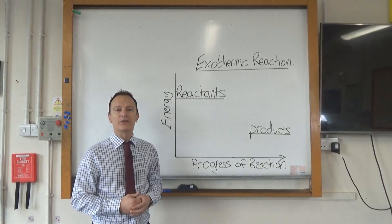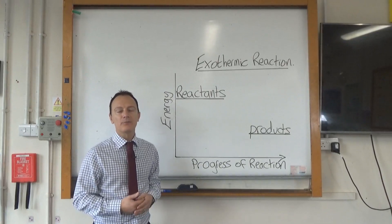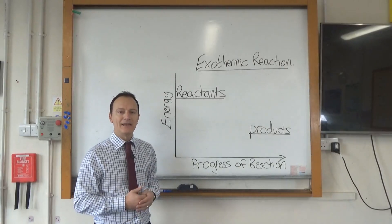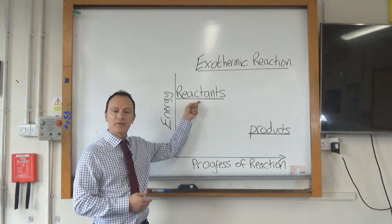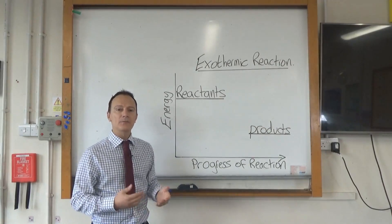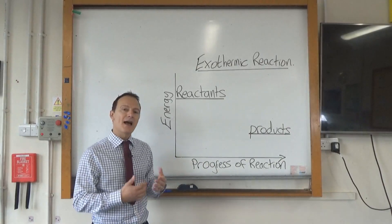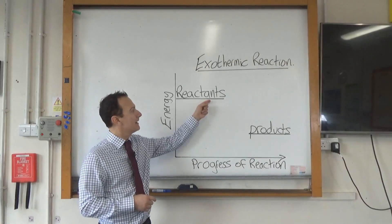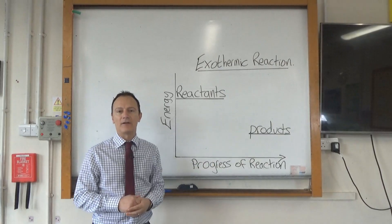We know that exothermic reactions give out heat energy to the surroundings, so as the reaction progresses the chemicals are going to give off energy and their energy level is going to decrease. So we can see that the energy level of the reactants is higher than the energy level of the products. Sometimes this is an exam question — they will show you a reaction profile and ask how do you know this is for an exothermic reaction, and your answer would be: the energy level of the reactants is higher than the energy level of the products.